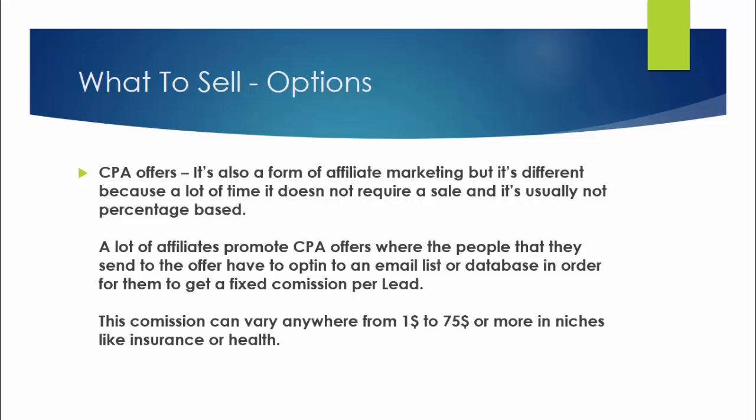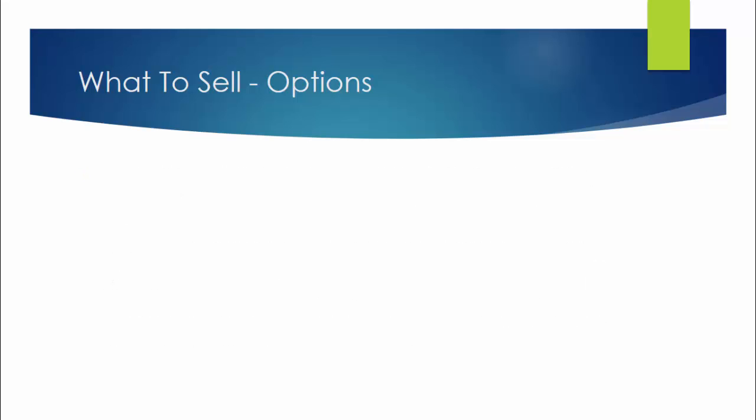The commission you can get as a CPA affiliate can range anywhere from one dollar to seventy-five dollars or even more, in popular high-demand niches like insurance or health. You can find these offers on platforms like MaxBounty or Affiliates, along with plenty of others you can search for on Google.